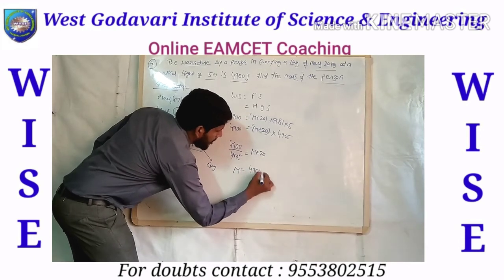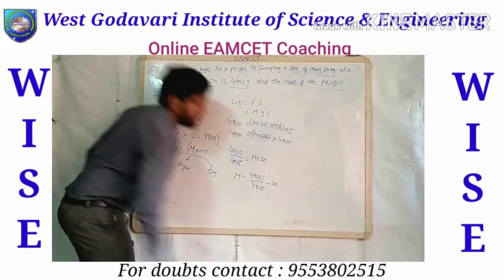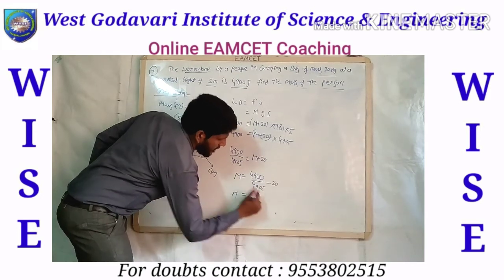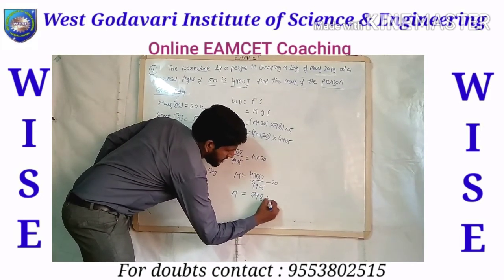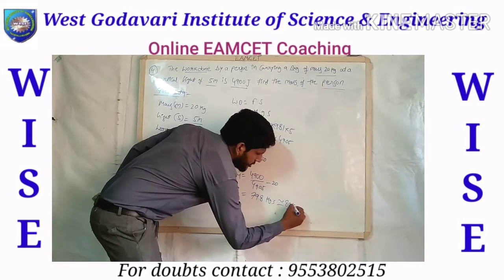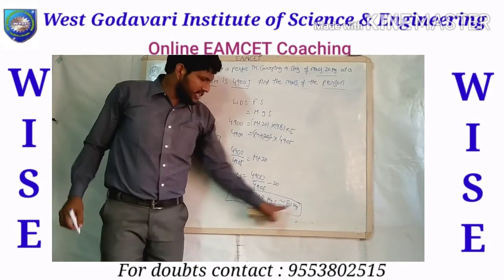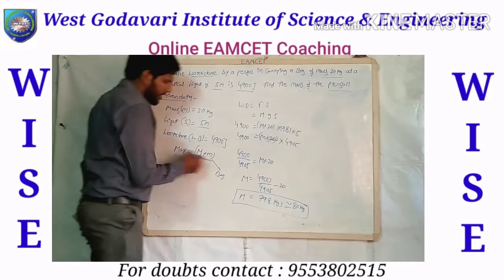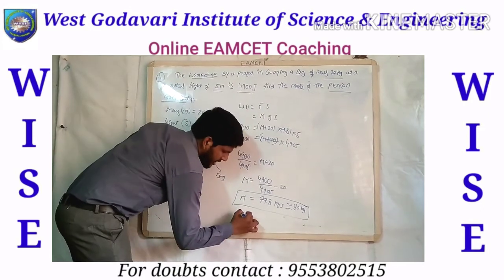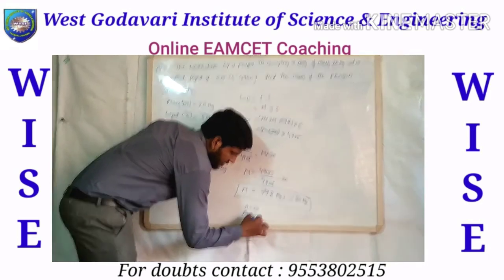Solving: mass = (4900 ÷ 49.05) − 20. The calculated value is 79.8 kg, approximately 80 kg total. So the total mass is 80 kg. Removing the bag mass of 20 kg, the person's mass is 60 kg. Therefore capital M (person mass) is 60 kg and small m (bag mass) is 20 kg, giving a total of 80 kg.